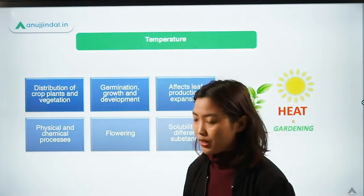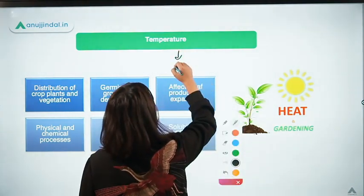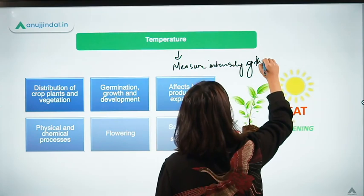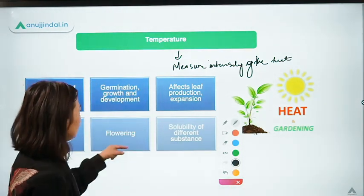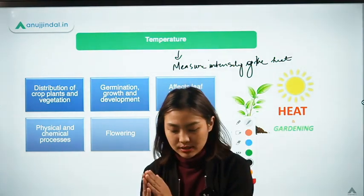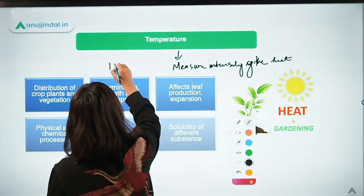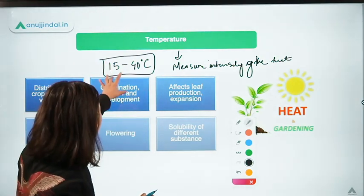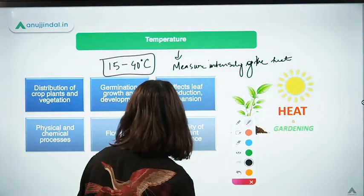Coming to temperature — temperature is the measure of the intensity of heat, and it plays a very important role in normal growth and development. There are six major roles of temperature in proper growth and development. The range of temperature which is optimum for maximum growth and development in agricultural plants is from 15 degrees Celsius to 40 degrees Celsius. This is the optimum range where crops can achieve maximum production.